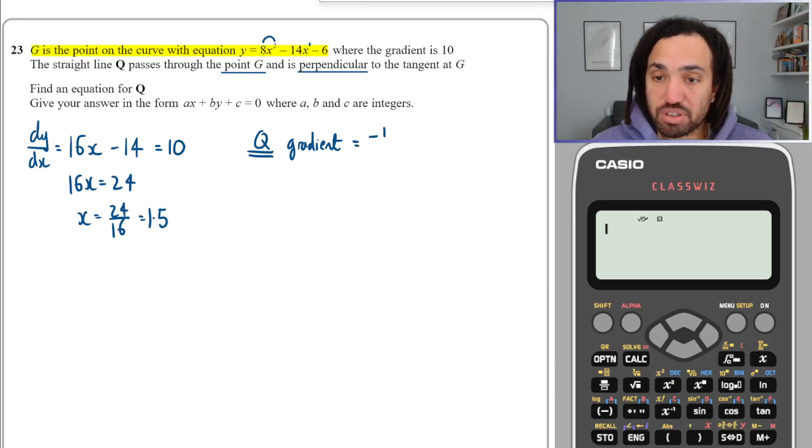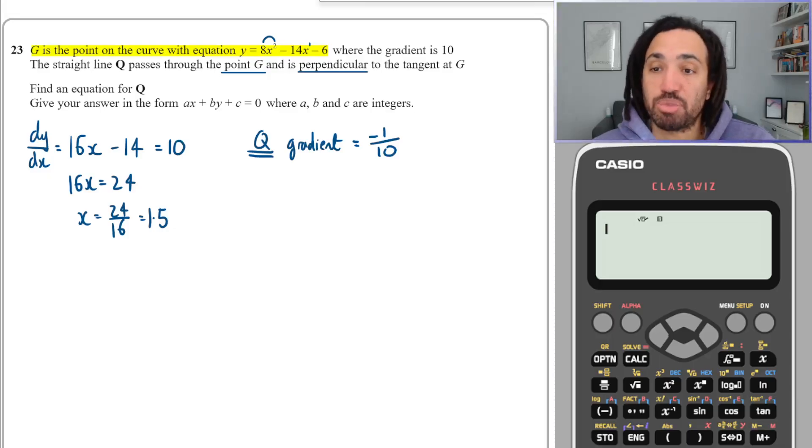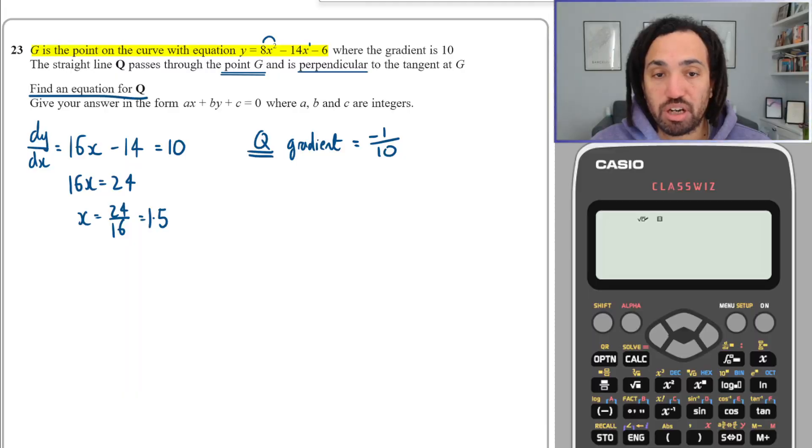So Q is perpendicular to the gradient of 10, so the negative reciprocal gives us the perpendicular gradient. That would be -1/10, so we flip it over to 1/10 and take the negative of it. Because it was positive, it becomes negative. We also know it passes through the point G, so in order for me to actually find the equation of the line Q, I need the whole point G. I need the x and the y coordinate.